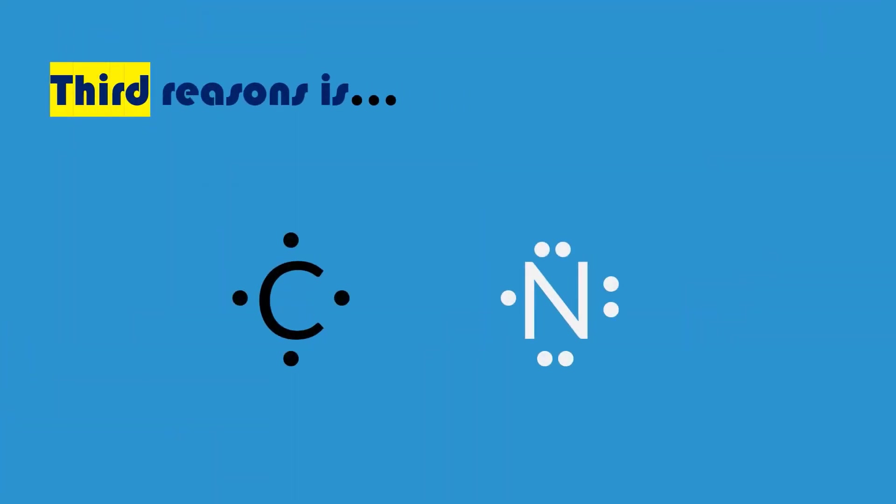The third reason is that carbon atoms can share not only a single electron with another atom to form a single bond, but can also share two or three electrons, forming a double or triple bond. This makes for a huge number of possible bond combinations at different places, making a huge number of different possible molecules. A molecule that differs by even one atom or one bond position is a molecule of a different compound.